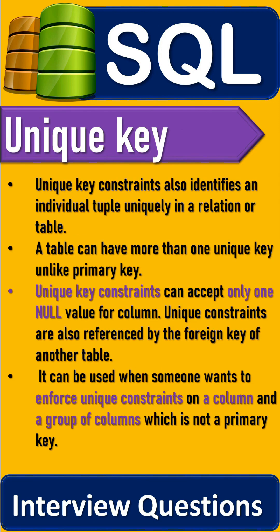Unique key constraints also identify an individual tuple uniquely in a relation or table. A table can have more than one unique key, unlike a primary key. Unique key constraints can accept only one null value for a column. Unique constraints are also referenced by the foreign key of another table.